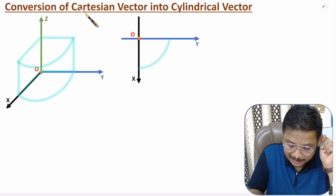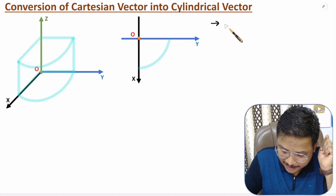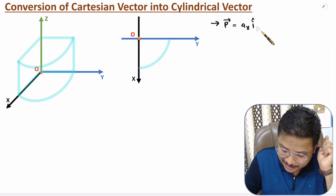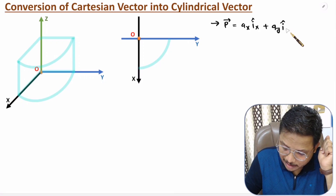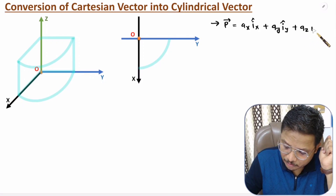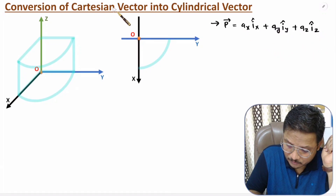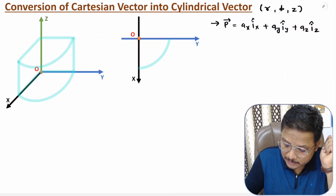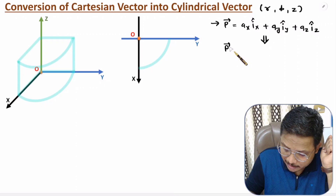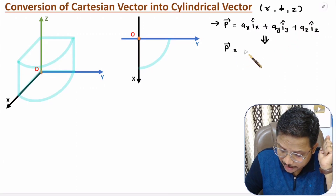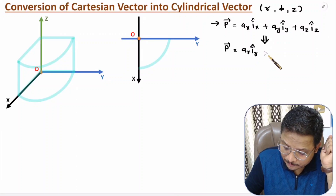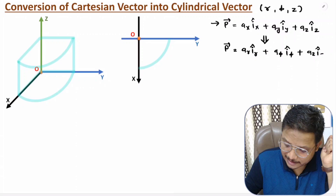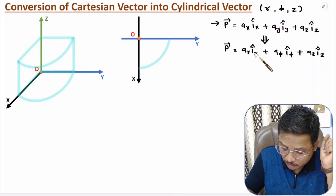First of all, you need to understand what a Cartesian vector is. Let us consider vector P in the form of a Cartesian vector: that will be Ax in the X direction plus Ay in the Y direction plus Az in the Z direction. This is the Cartesian vector we need to convert into a cylindrical vector. Cylindrical parameters are R, phi, and Z, so we need vector P in the form: AR in the IR direction plus Aphi in the Iphi direction plus AZ in the IZ direction.